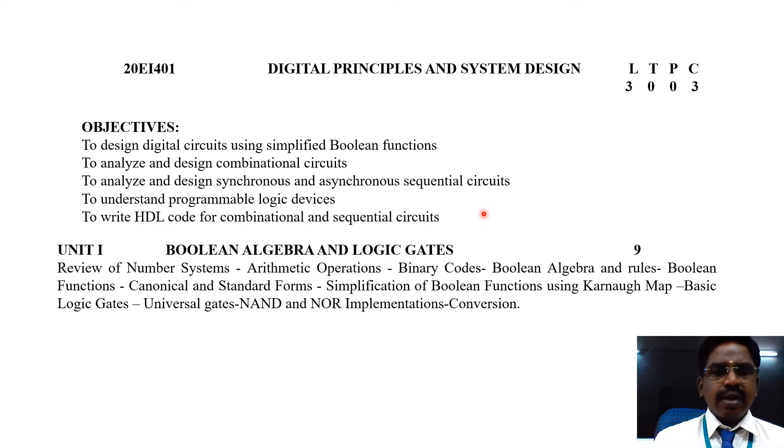Under this unit 1, we are going to study the review of number systems, arithmetic operations, binary codes, Boolean algebra and rules, Boolean functions, canonical and standard forms, simplification of Boolean functions using Karnaugh map, basic logic gates, universal gates like NAND gate and NOR gate, and their conversions.